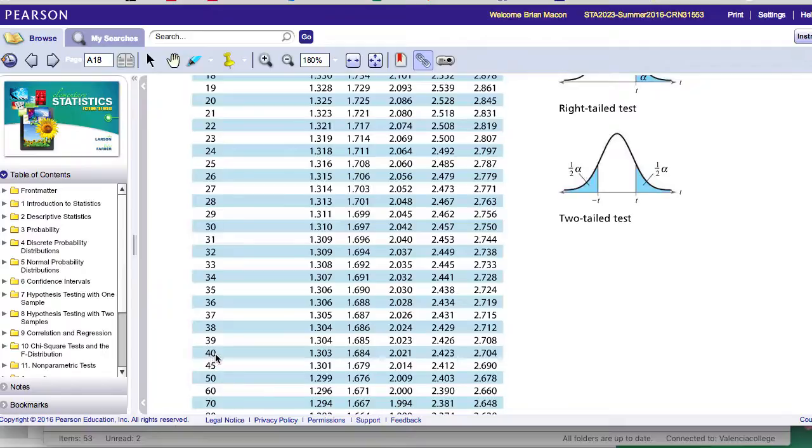So if I have a sample size of 41, then I subtract 1, and I get 40 degrees of freedom. And so any sample size 41 or smaller, I can find the degrees of freedom very easily.